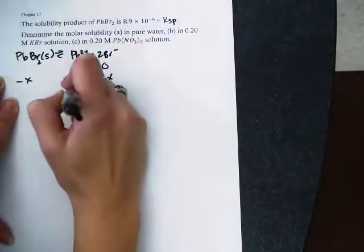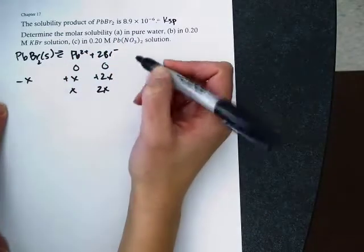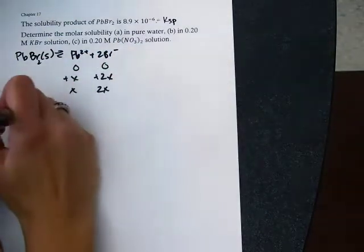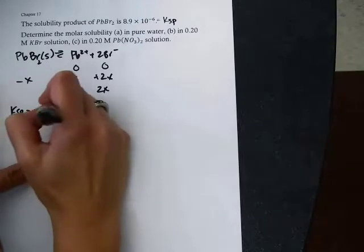When I do this regular ICE table thing, where it's just plus X, plus 2X, all that stuff, this is for in water, right? That's what we're always doing. So that's already part A.